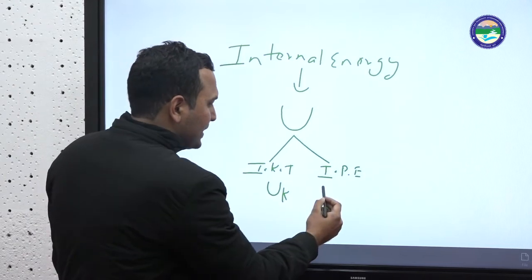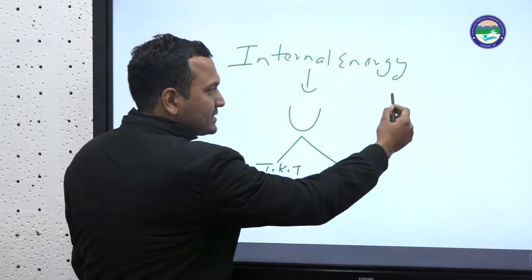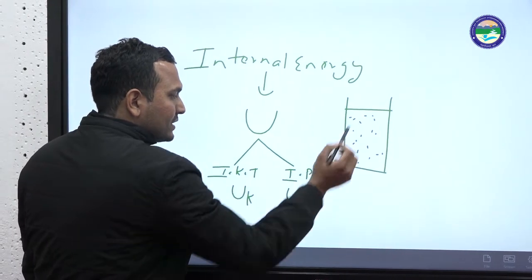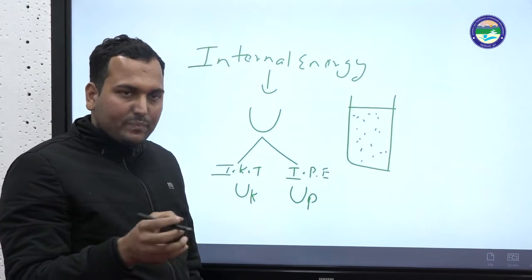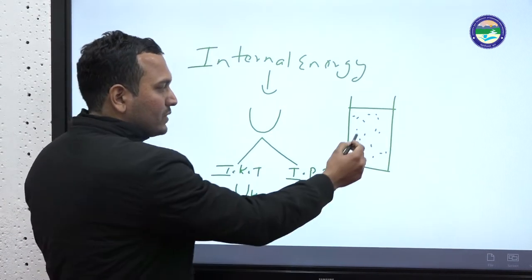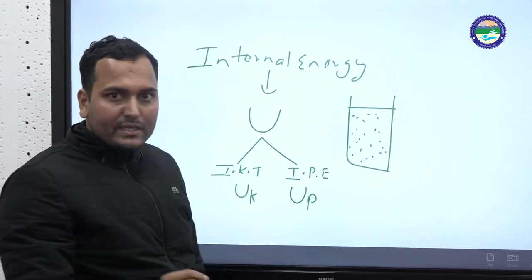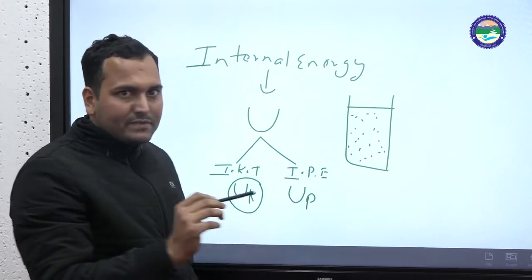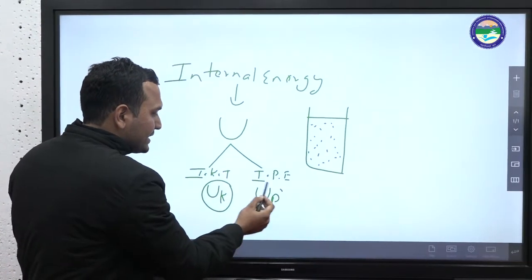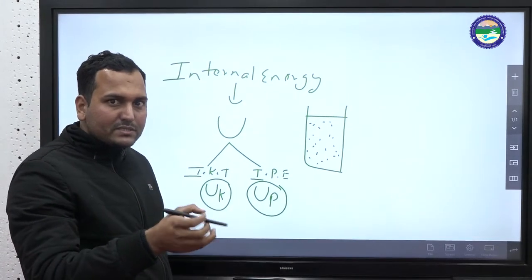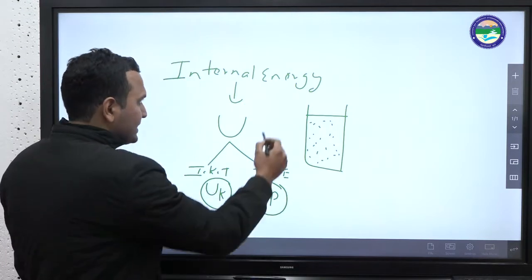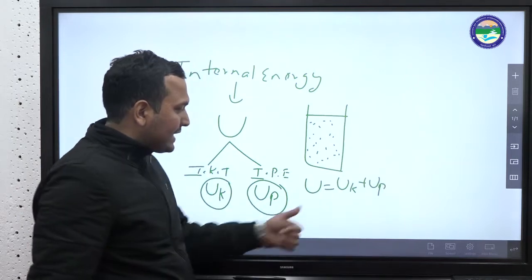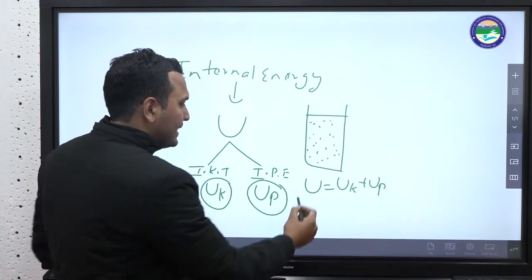What do we call internal potential energy? That is UP. If we talk about a system — for example, if we have some gas — without any heat supply from outside, the gas molecules will have two types of energies: one due to their motion, that is internal kinetic energy (UK), and the other due to configuration and position, that is internal potential energy (UP). The sum of these two energies is called internal energy: U = UK + UP.